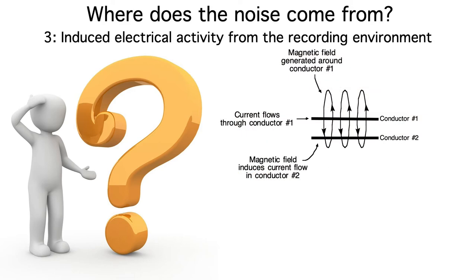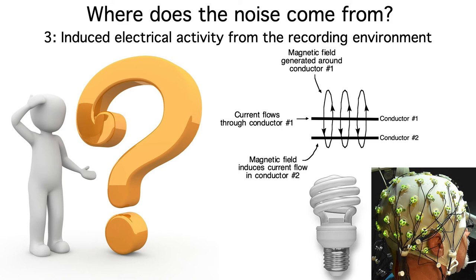The third source of noise in EEG recordings is induced electrical activity from the recording environment. When a current flows through a conductor, it's accompanied by a magnetic field. If that magnetic field then passes through another conductor, it induces the flow of electric current in that second conductor. As a result, AC electrical current flowing back and forth through a light bulb at 60 Hz will create a 60 Hz magnetic field oscillation, which then induces a 60 Hz voltage oscillation in our EEG electrodes — or it may be 50 Hz, depending on what country you're in.